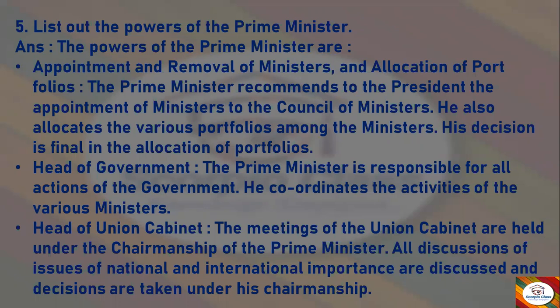Next: Head of Government — the Prime Minister is responsible for all actions of the government and coordinates the activities of the various ministers. Next: Head of Union Cabinet — the meetings of the Union Cabinet are held under the chairmanship of the Prime Minister. All discussions of issues of national and international importance are discussed and decisions are taken under his chairmanship.